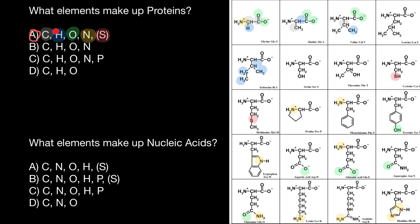In every amino acid, we can find carbon, hydrogen, oxygen, and nitrogen. And in two amino acids, we also can find sulfur in the R group.